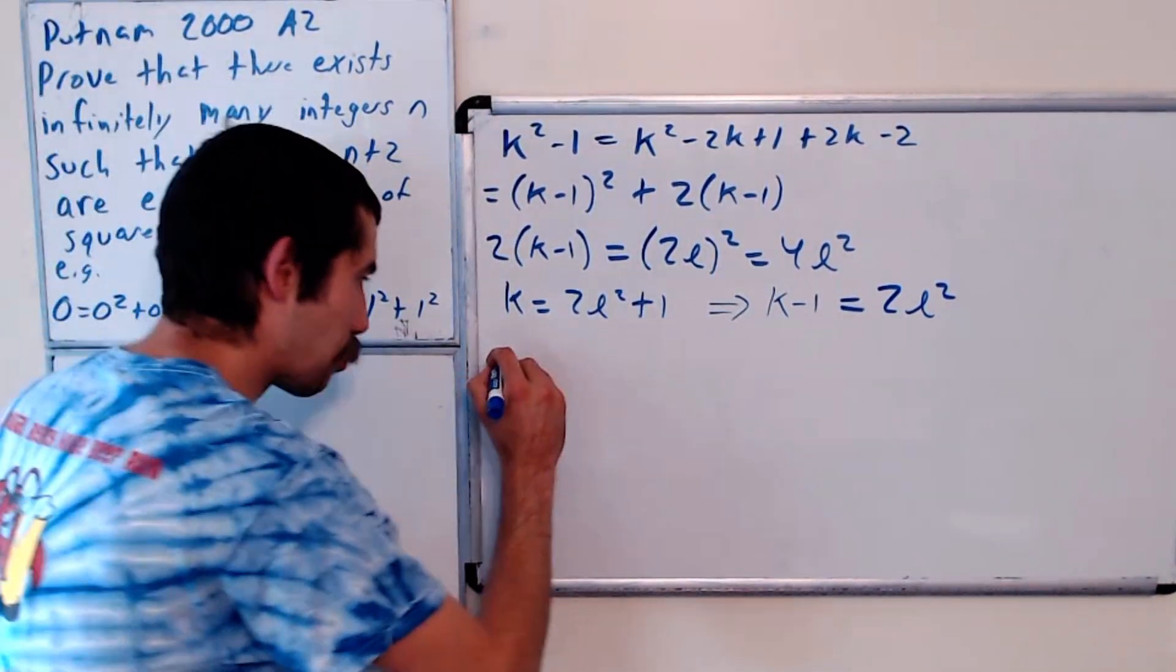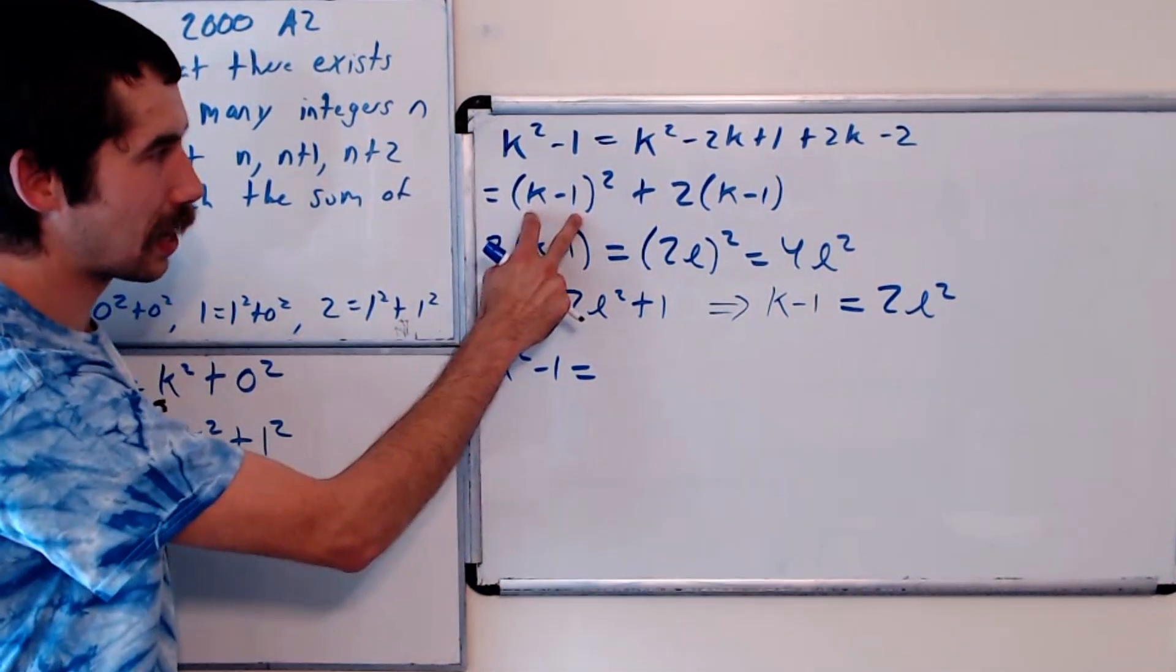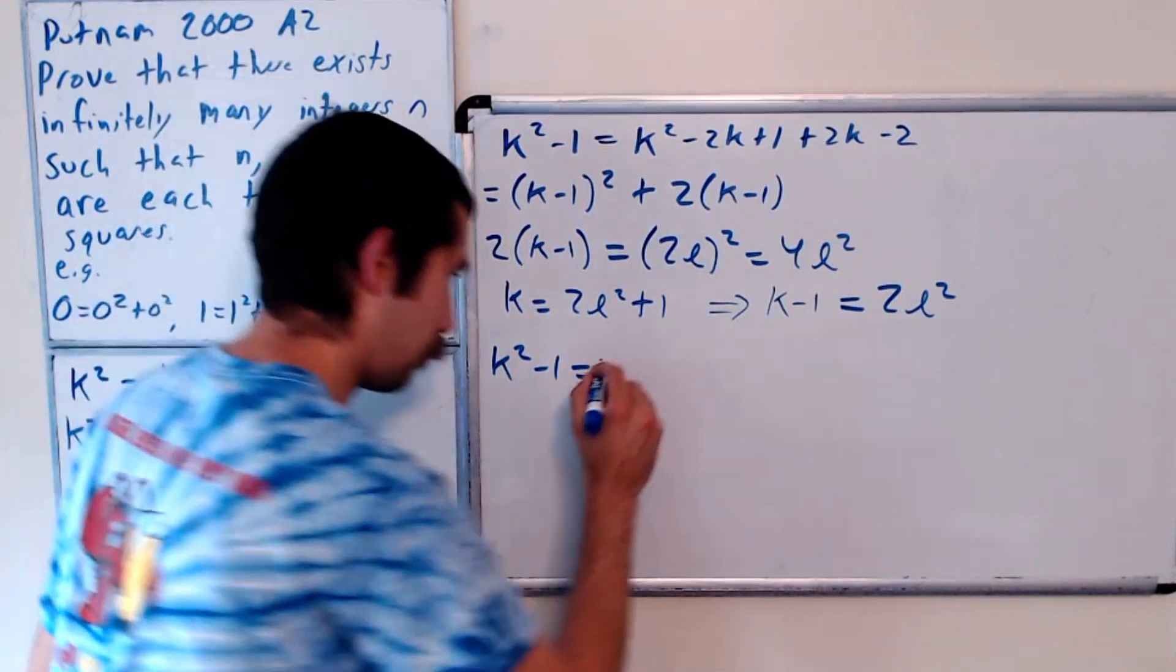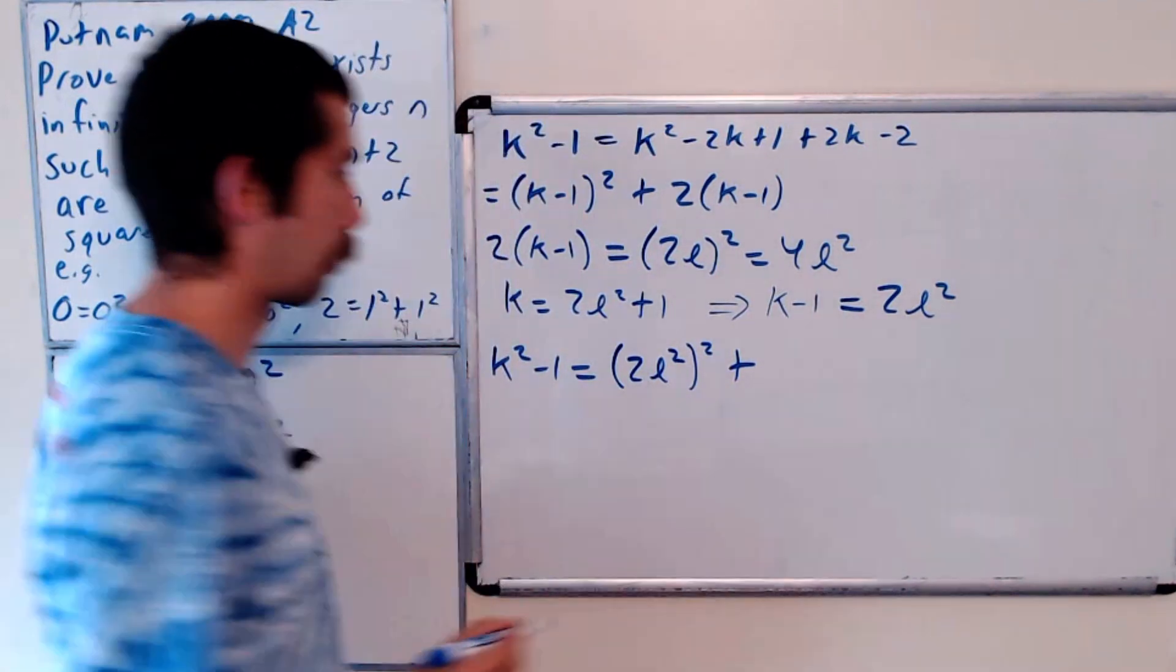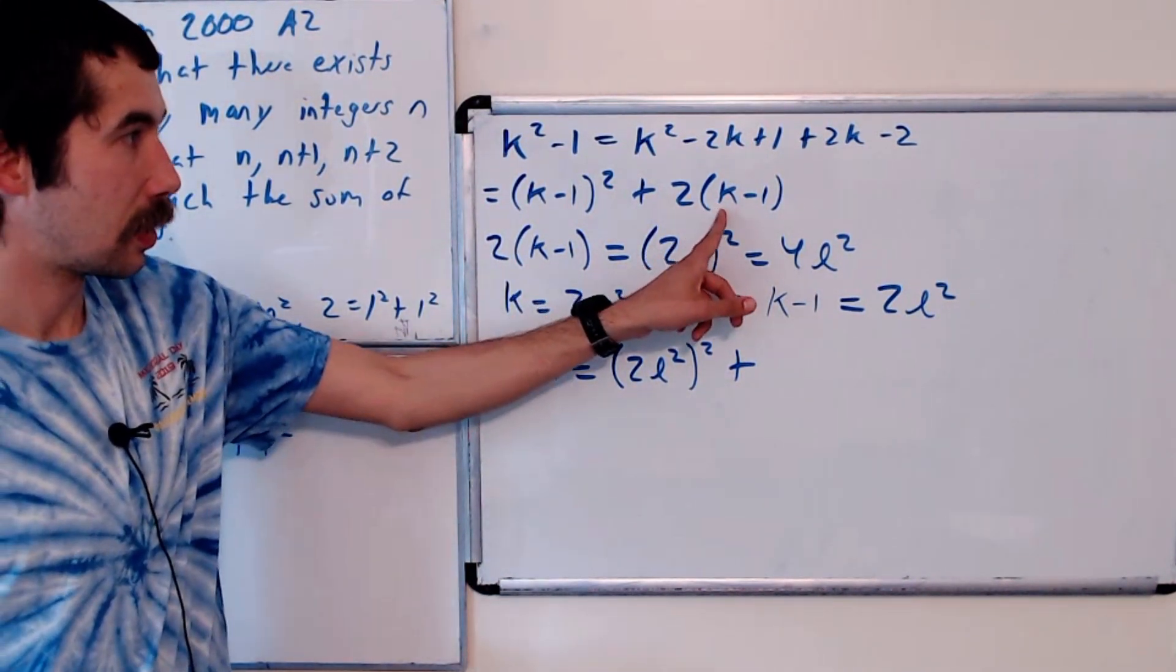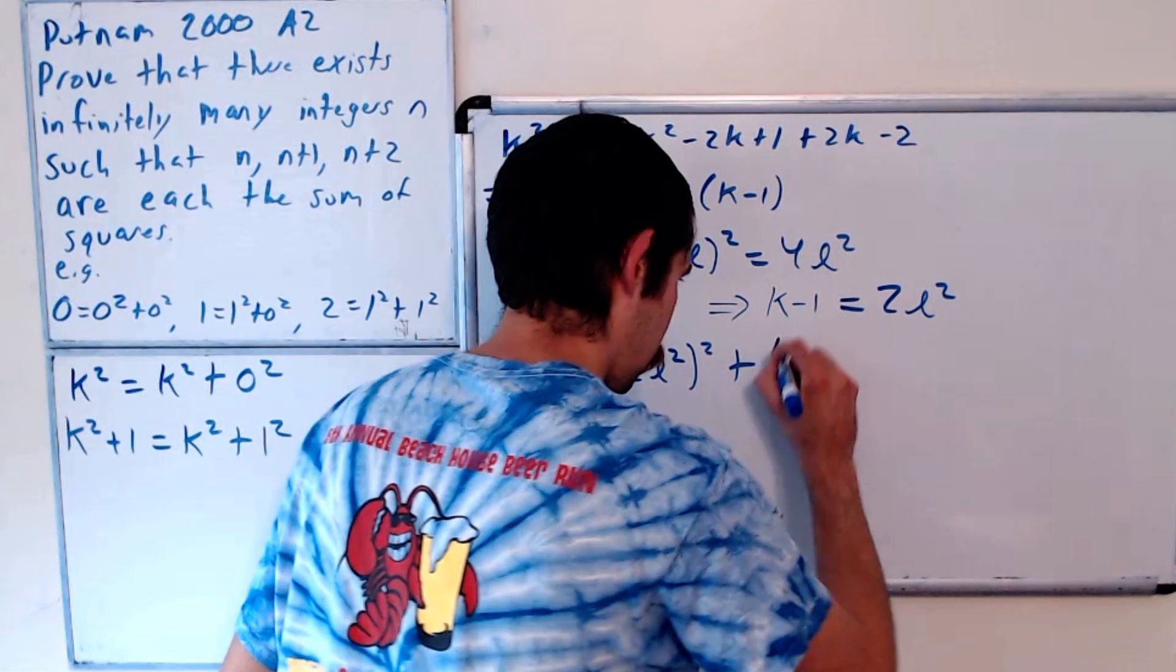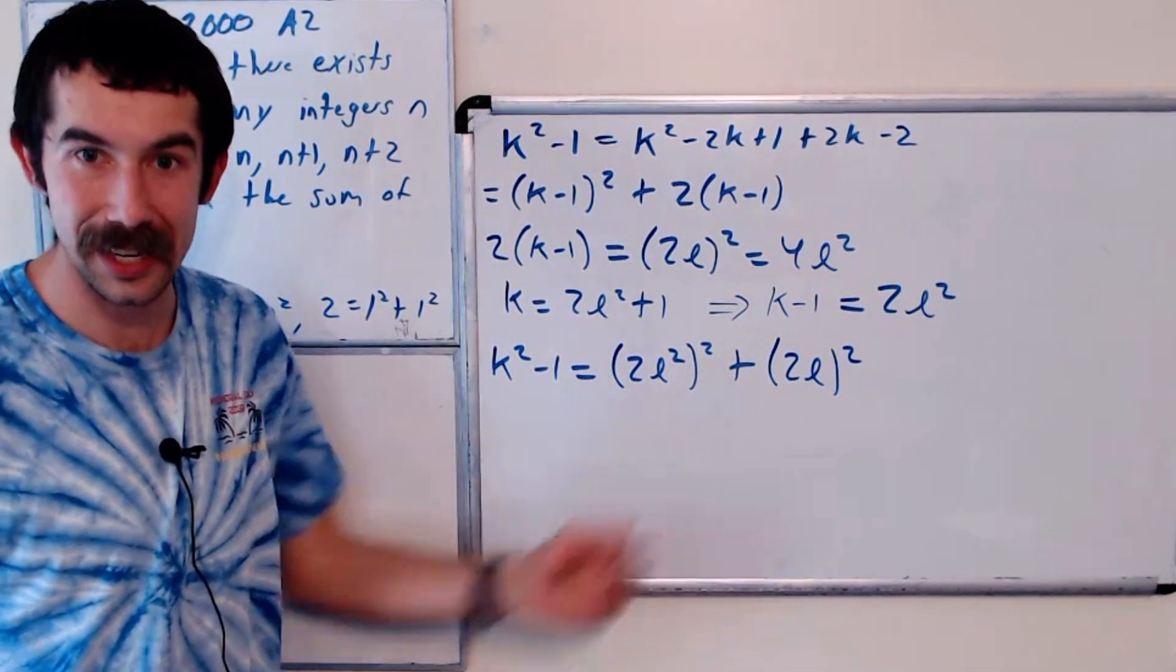So k squared minus 1 is equal to k minus 1 squared. So that's 2l squared squared plus 2 times k minus 1, which is 4l squared. So that's the sum of two squares.